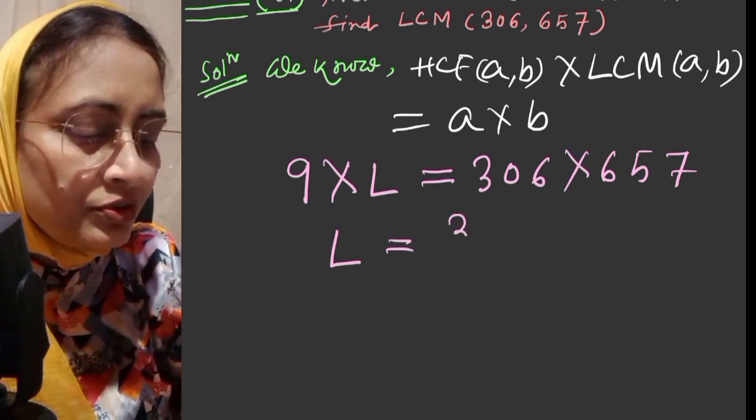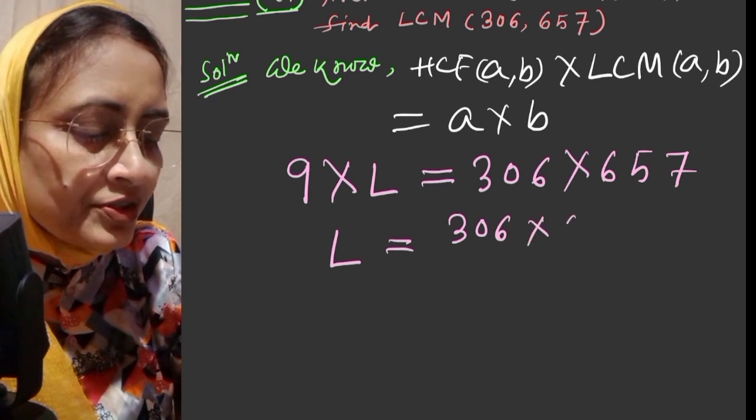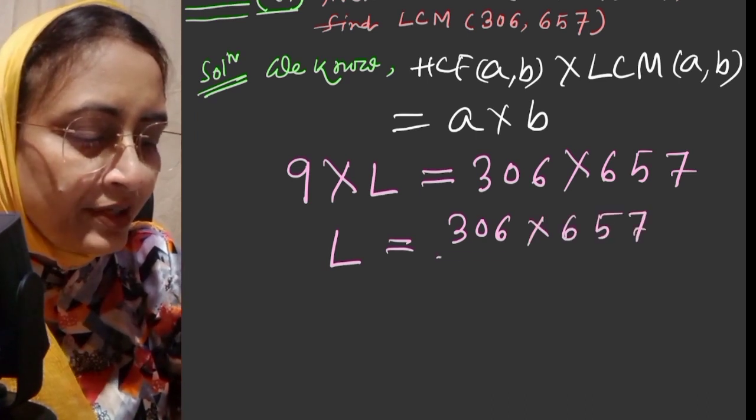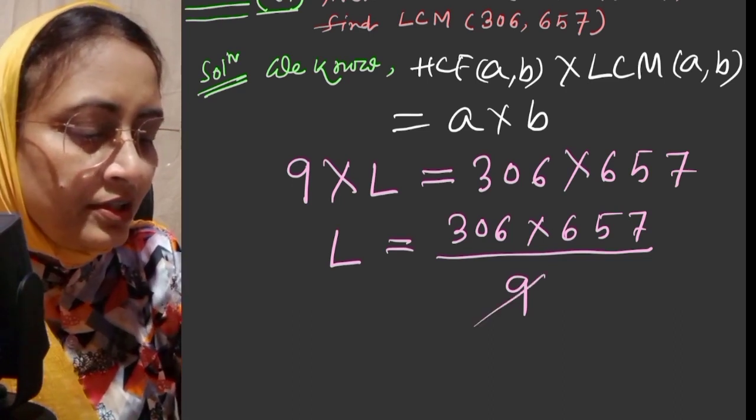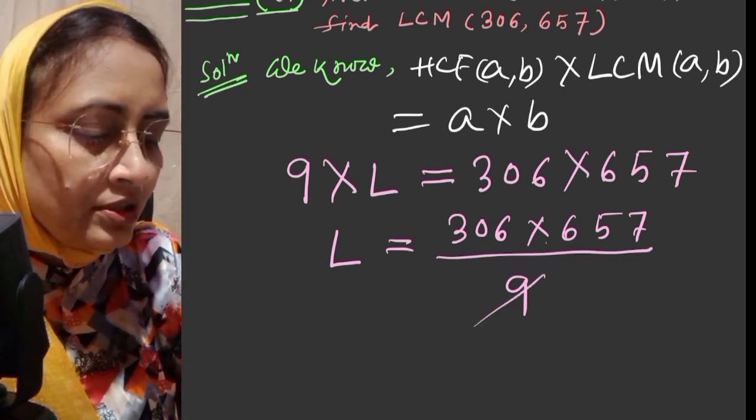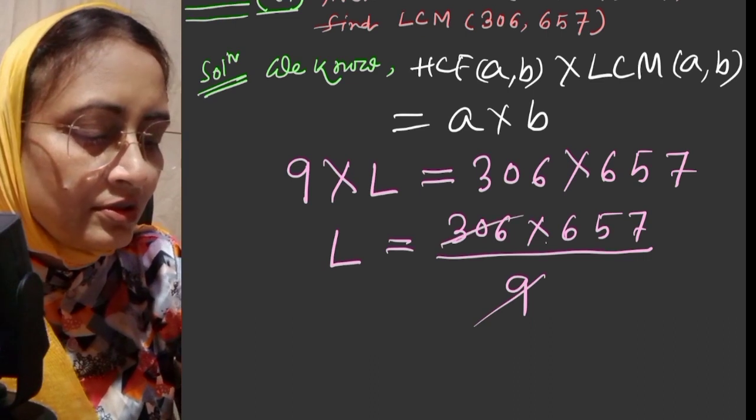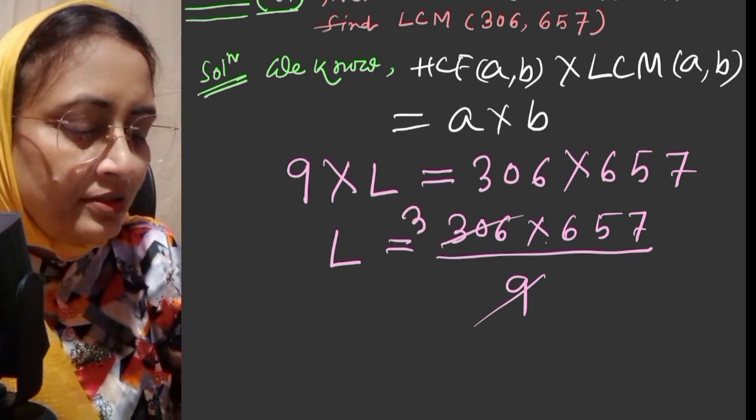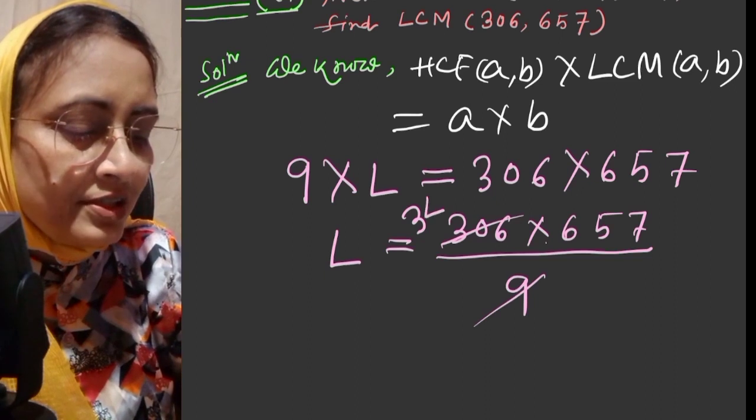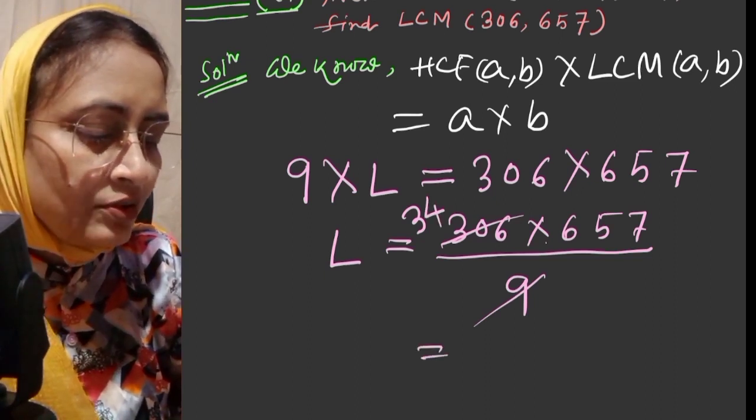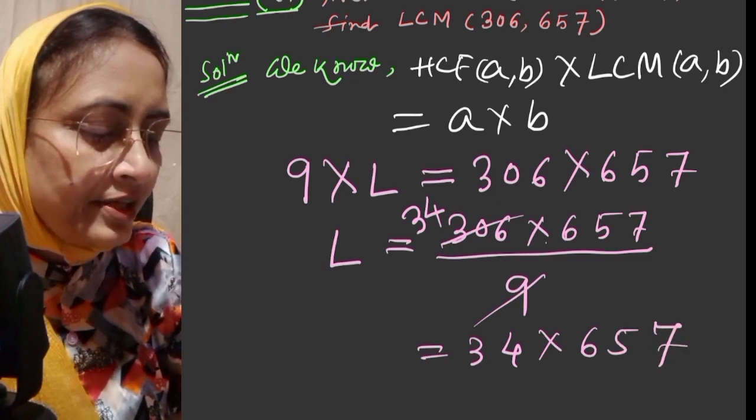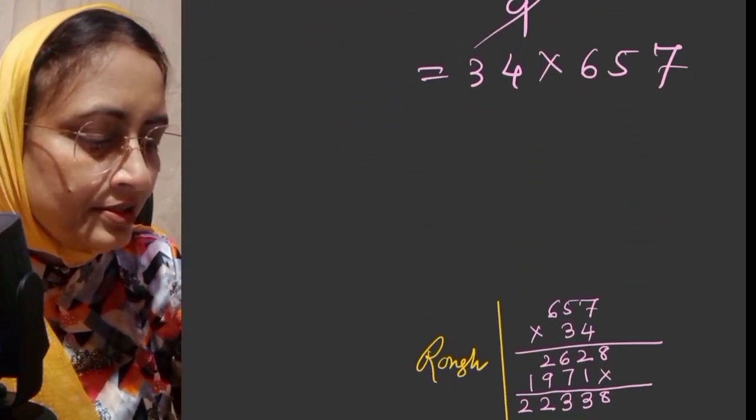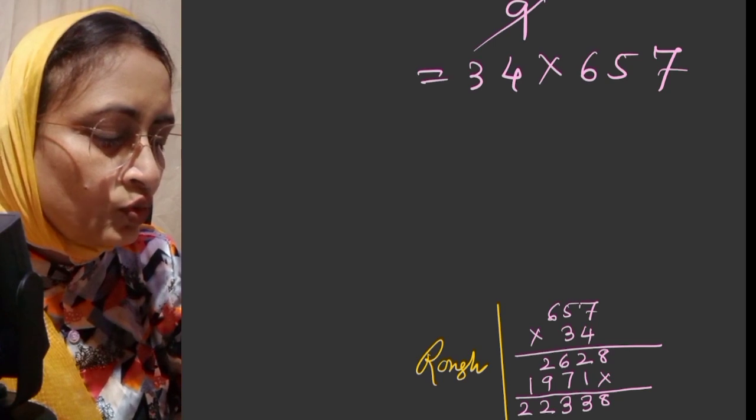Now LCM, which we need to find out, is equal to 306 into 657 divided by 9. Cancelling out 9, we get 34 into 657. I have done this calculation: 34 into 657 is 22,338. This is equal to 22,338 and this is our LCM.